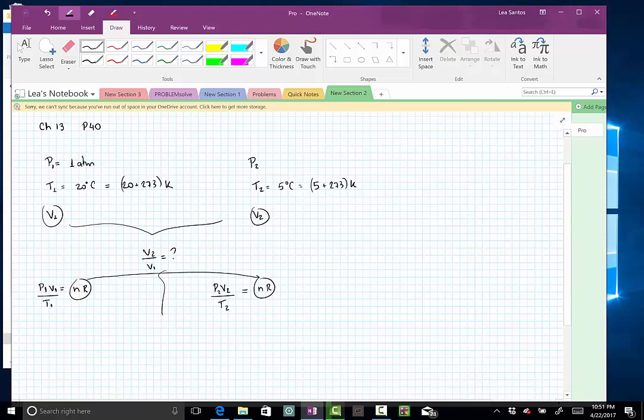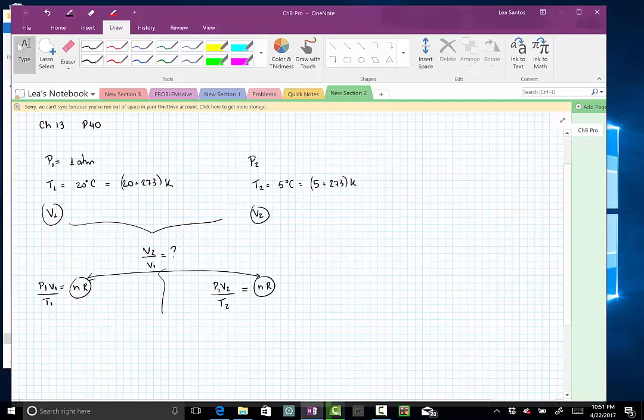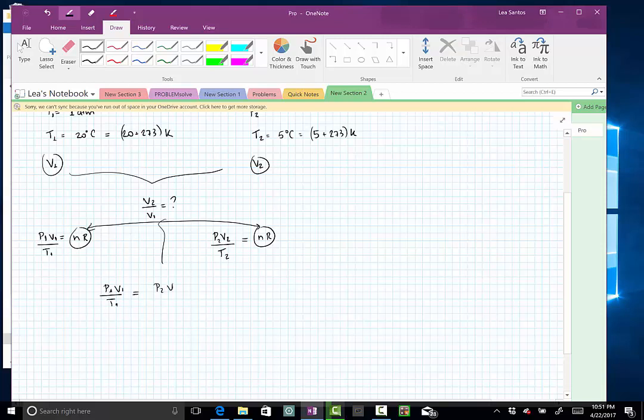So this equals that. I can write this as a fraction: P1 V1 over T1 equals P2 V2 over T2. From here I'm going to be able to find the ratio of the volumes.